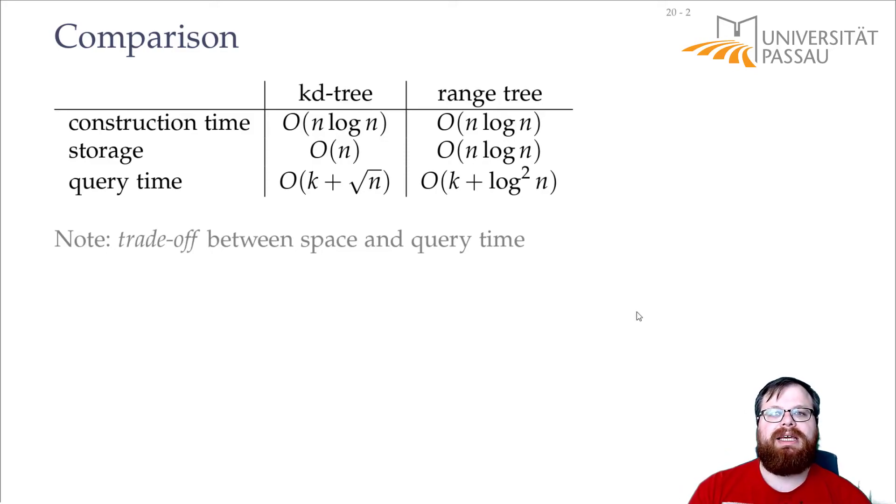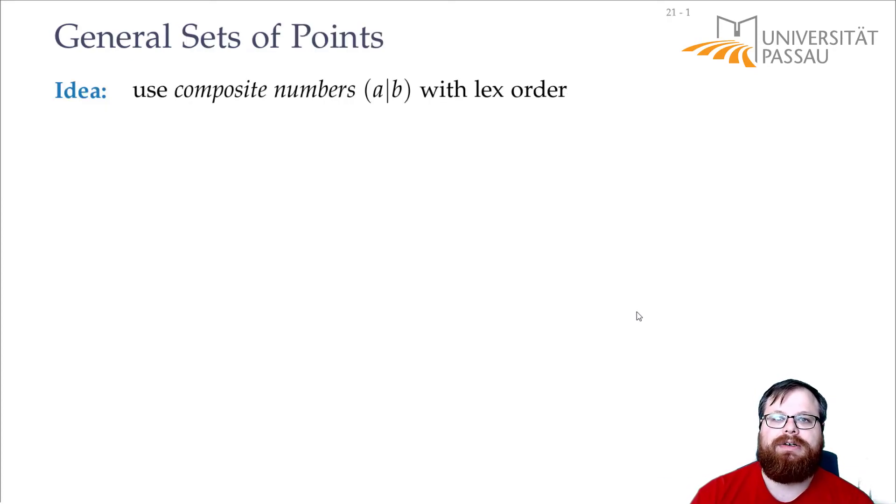There's one more thing. In the beginning, we assumed that we have general position. No two points have the same x- or y-coordinate. Now we want to get rid of this. And to get rid of this, we use a little trick. We use composite numbers with a lexicographical order.